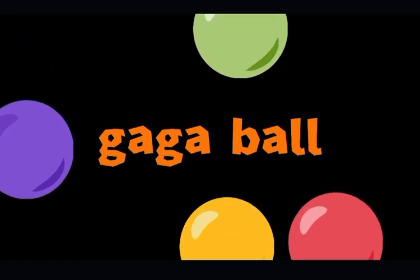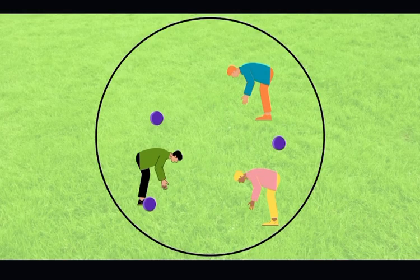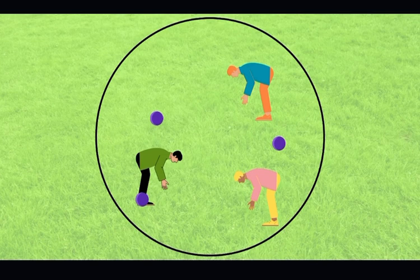In Gaga Ball, all students will start inside of a circle with numerous softballs inside. Students will then hit the ball along the grass with an open hand, attempting to get the ball away from them and closer to somebody else.